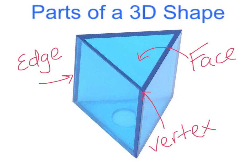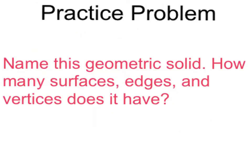These are all of the parts of a 3D shape. Here is your practice problem for the day. Name this geometric solid. How many surfaces, edges, and vertices does it have?